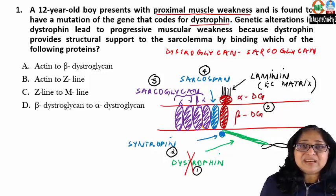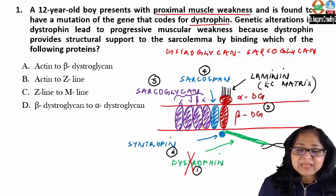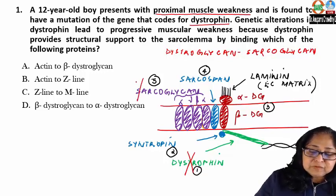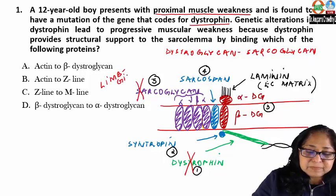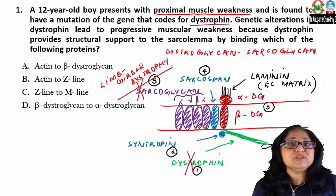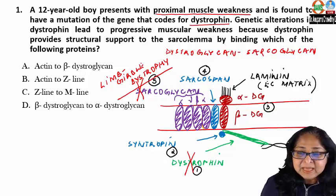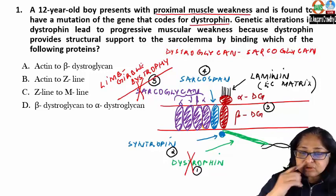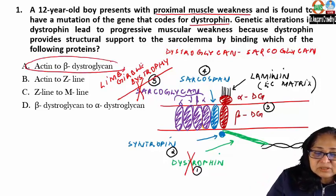If dystrophin is reduced rather than absent, it gives rise to Becker's muscular dystrophy. A mutation of sarcoglycan gives rise to the limb girdle dystrophies. There are almost 20 different types of dystrophies known due to mutations of sarcolemma proteins. The answer to this question is that dystrophin binds actin to dystroglycan.